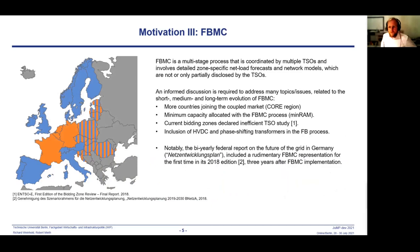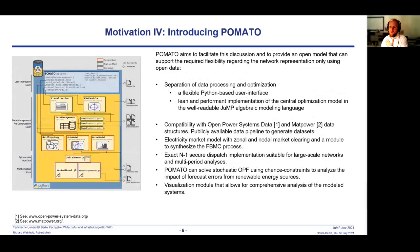Those issues include, among others, the extension to the core region, the effect of minimum trading capacities in the flow-based market coupling process, or changes in bidding zone configurations. Pomato aims to facilitate these discussions and provides an open model that can support the required flexibility regarding network representation, using only open methods and data. Some of the main features and contributions include the separation of data management, implemented in Python, and optimization, implemented in Julia.